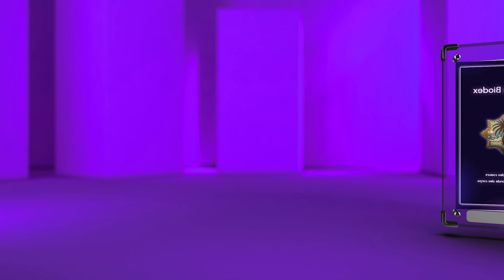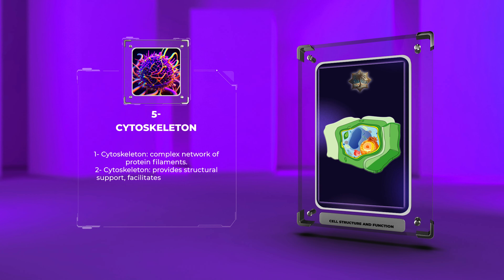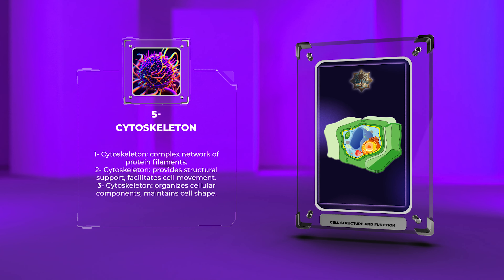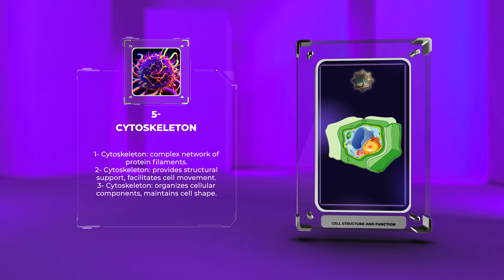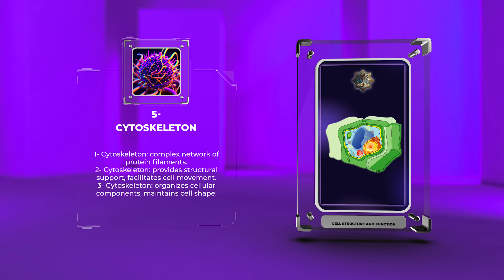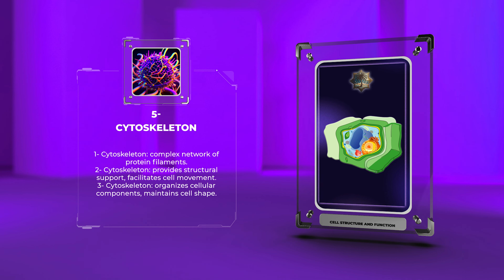The cytoskeleton is a complex network of protein filaments that provides structural support, facilitates cell movement, and organizes cellular components. Composed of microtubules, microfilaments, and intermediate filaments, the cytoskeleton plays a crucial role in maintaining cell shape and participating in intracellular transport processes.